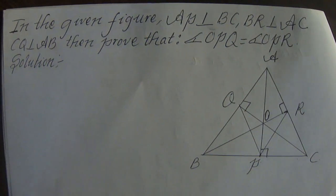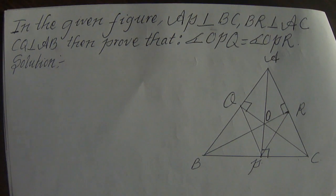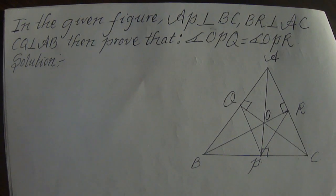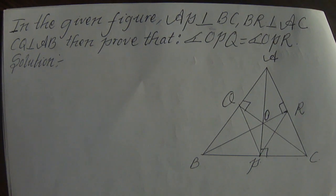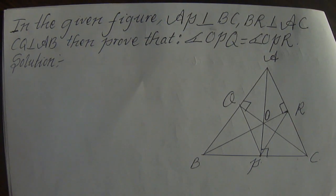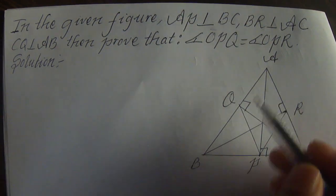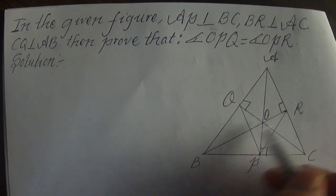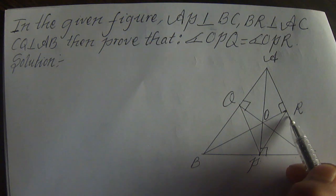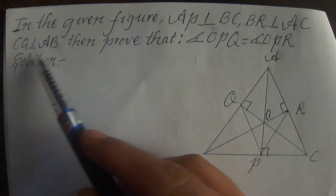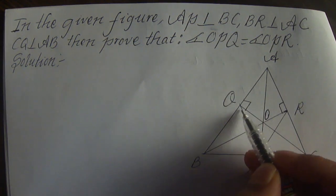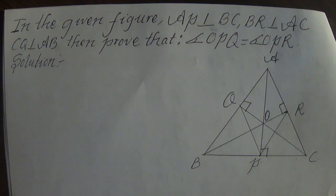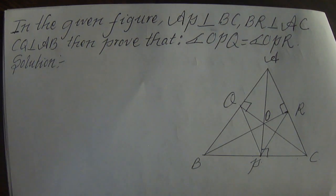This is the first time in Nepal. I have a challenging question to ask. In a given figure, AP is perpendicular to BC, meaning angle equals 90 degrees. BR is perpendicular to AC, meaning BR makes a 90 degree angle. CQ is perpendicular to AP, making a 90 degree angle — this is a confusing type of problem.